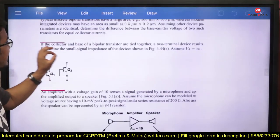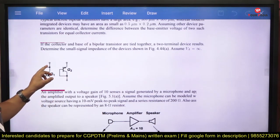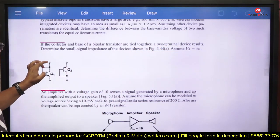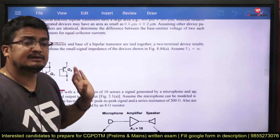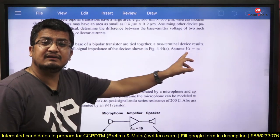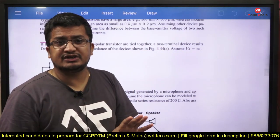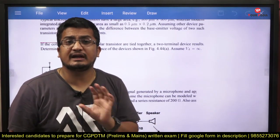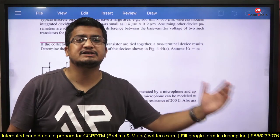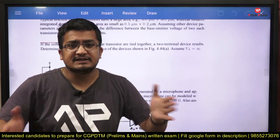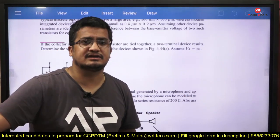Next question: the collector and base of a bipolar transistor are tied together, resulting in a two-terminal device. Determine the small signal impedance of this device, with VA infinite — meaning Early voltage is infinite, so neglect base-width modulation and finite output resistance. In MOSFET this corresponds to channel length modulation, and in BJT it is base-width modulation. Both have significant contribution to the π model and T model, which will be discussed in the theory section.